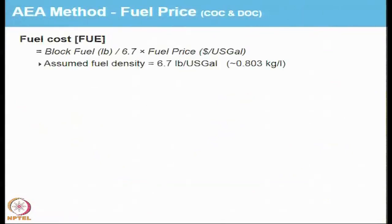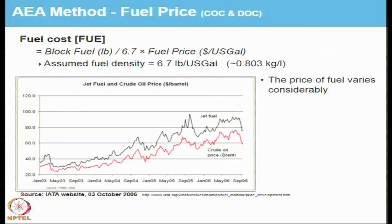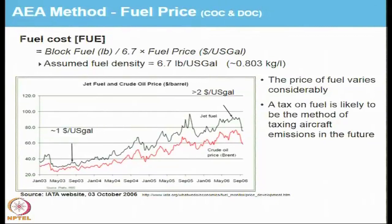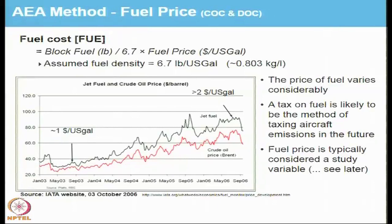Regarding fuel, the density is assumed as 6.7 pounds per US gallon or 0.803 kg per liter. Block fuel divided by 6.7 gives total gallons of fuel, then multiply by the fuel price per gallon. The fuel price varies considerably — from approximately 1 US dollar per gallon in September 2003 to over 2 dollars per gallon just three years later in September 2006. A tax on fuel is likely to be the method for taxing emissions in the future, so fuel price is treated as a study variable.